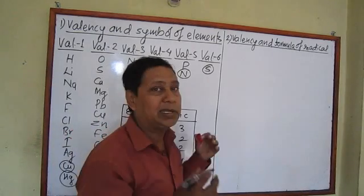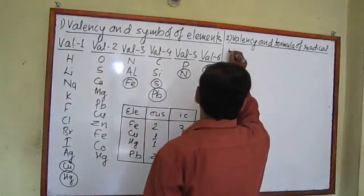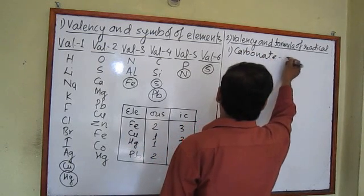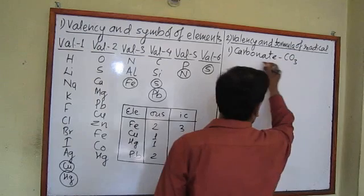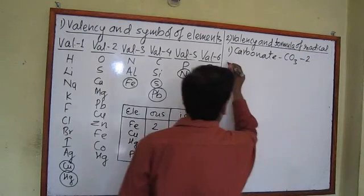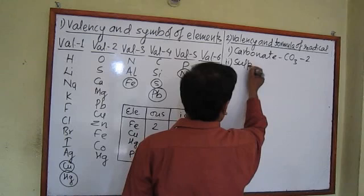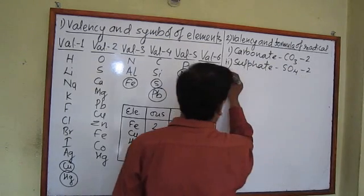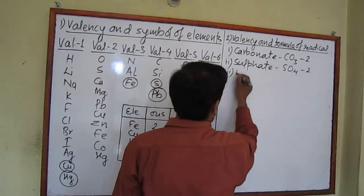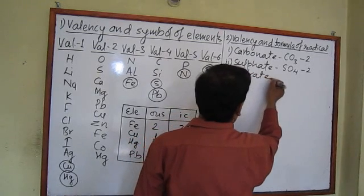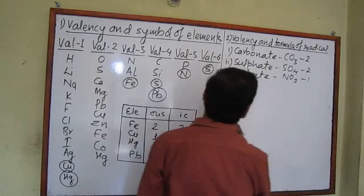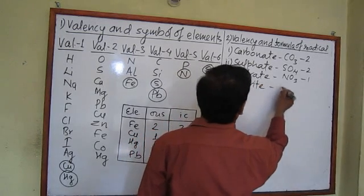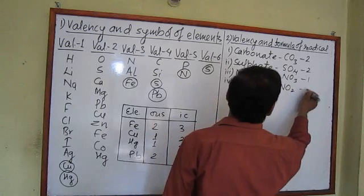Now let's look at the valency of some radicals that frequently appear in chemical reactions. Carbonate (CO3) has valency two. Sulfate (SO4) has valency two. Nitrate (NO3) has valency one. Nitrite (NO2) has valency one.